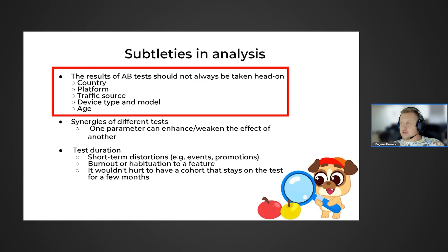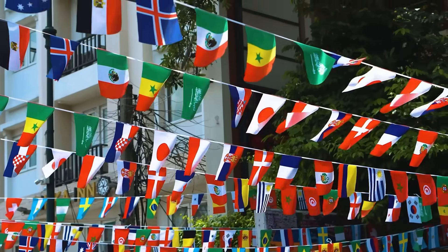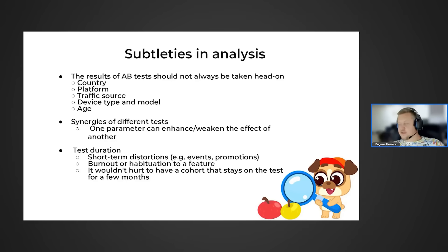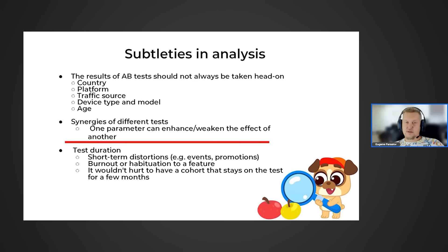Don't always take A-B testing results at face value. A parameter might stay the same for one cohort while increasing or decreasing for another. Take into account that people in different countries play differently — using analytics tools you can break down results by country, but this is only relevant if you have at least 10,000 users per country for statistical significance. You can also segment by platform, traffic source, device type and model to more precisely apply results. If you're running several A-B tests simultaneously, always check how each new test performed for each cohort.